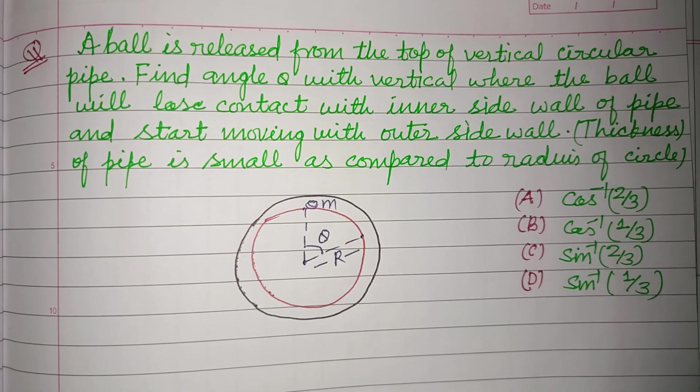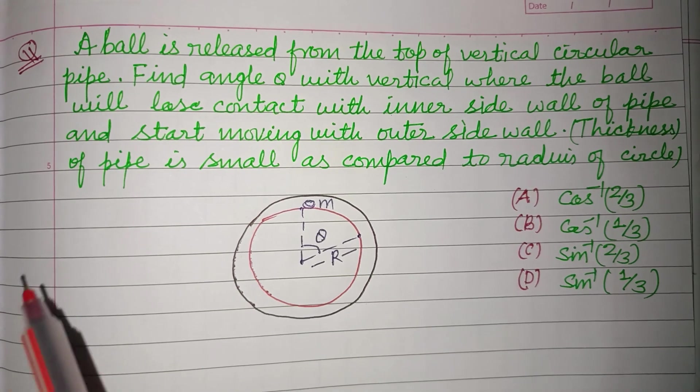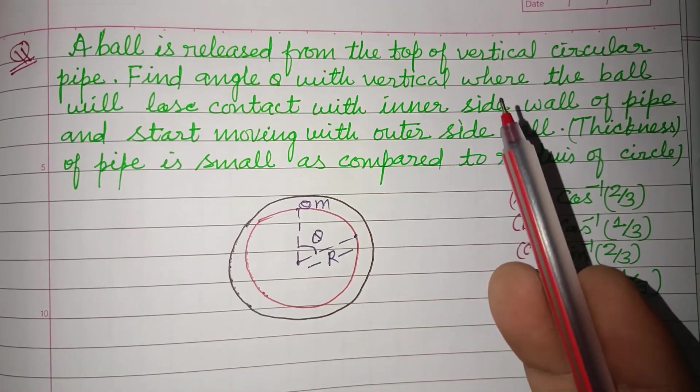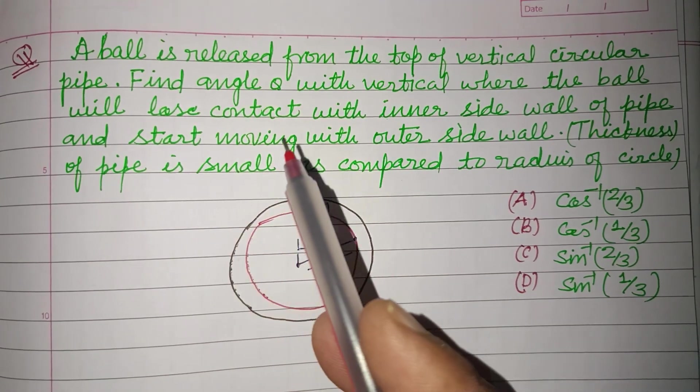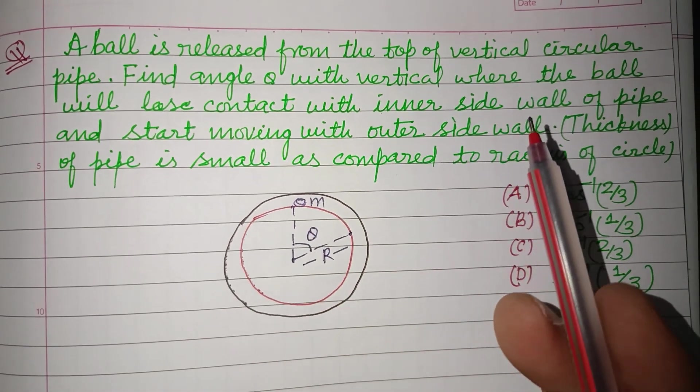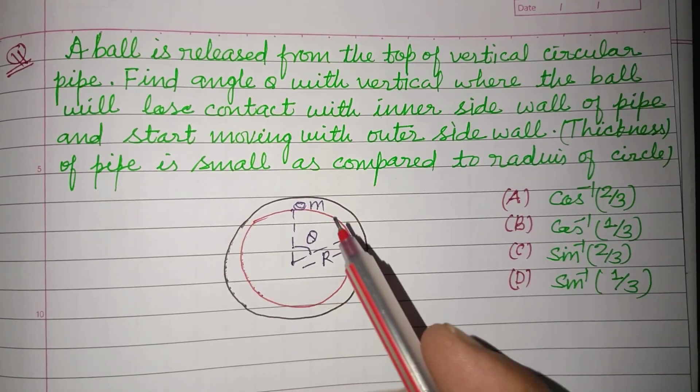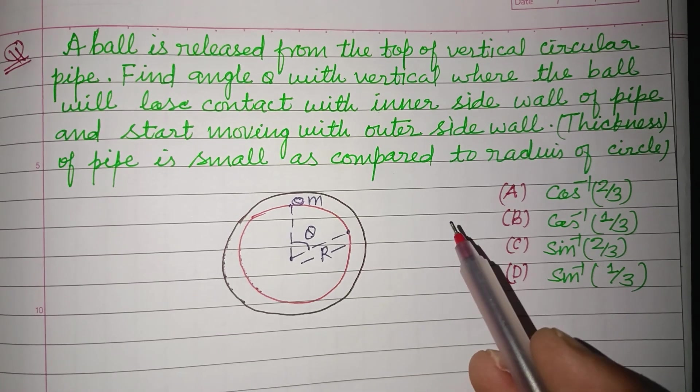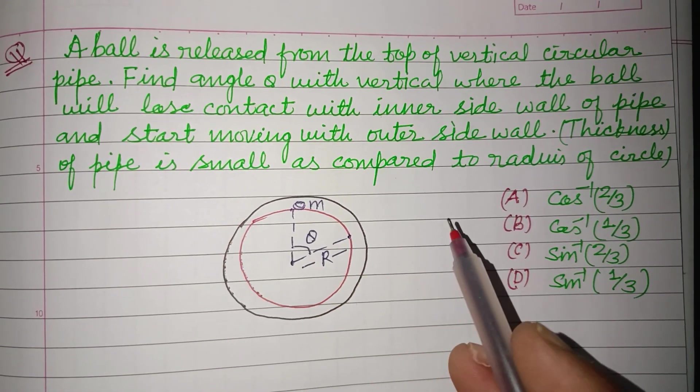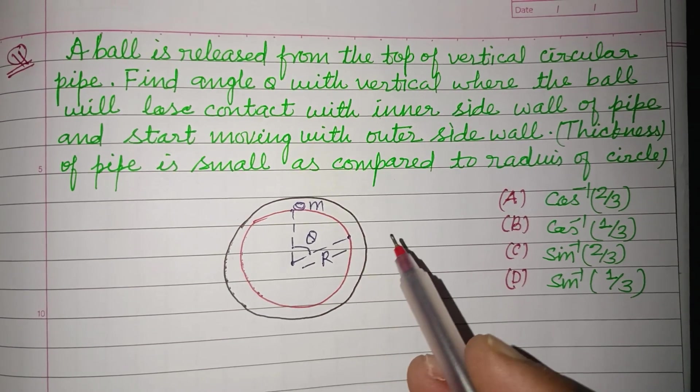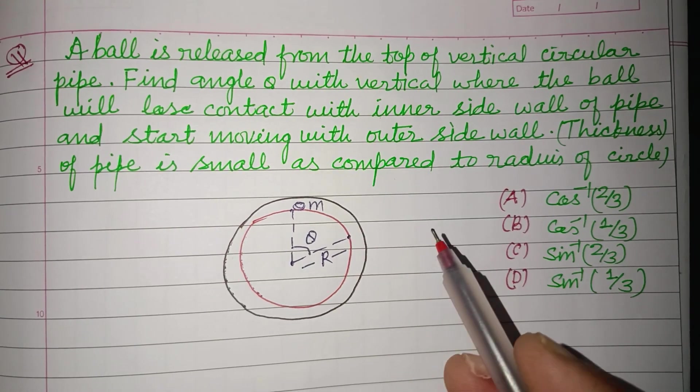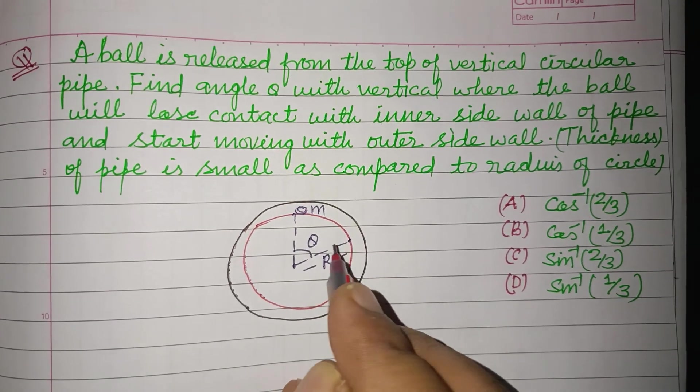Hello viewers, warm welcome to this YouTube channel. The question is: a ball is released from the top of a vertical circular pipe. Find angle theta with vertical where the ball will lose contact with inner side wall of pipe and start moving with outer side wall. Thickness of the ball is small as compared to radius of the circle.